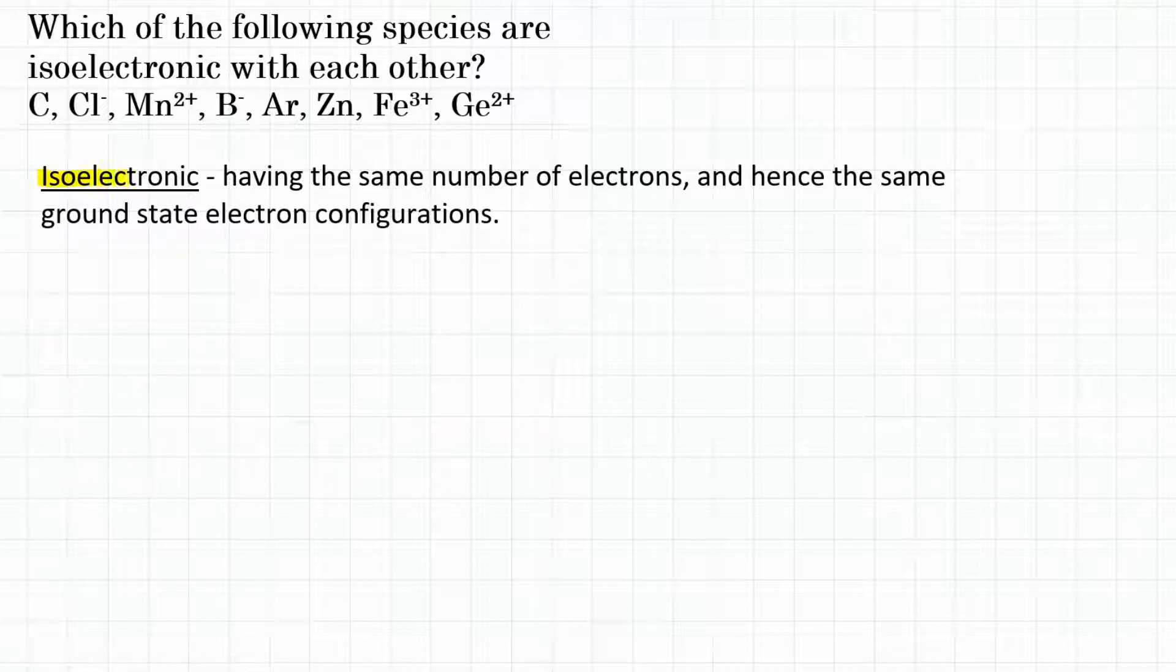Isoelectronic simply means having the same number of electrons, and hence the same ground state electron configurations. Why we talk about different atoms or ions being isoelectronic tells us if they have similar chemical properties. If you have different elements, different atoms and ions with the same electron configuration, they're probably going to behave most likely in the same way, and that is important in chemistry.